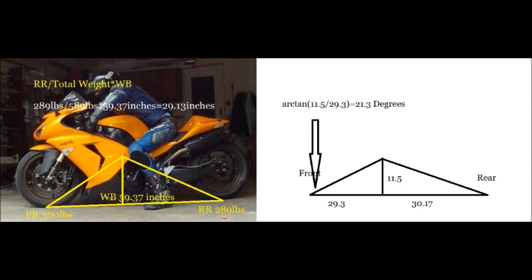Okay, since we know two sides and we know that the middle angle is 90 degrees, we can calculate and figure out the exact angle of the left triangle, which is arctan(11.5 inches / 29.3 inches), and we come up with 21.3 degrees for the front angle.